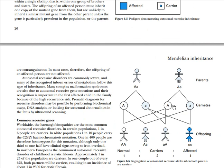By the Mendelian principle of segregation in autosomal recessive inheritance: when two parents are carriers, the probability of producing children who are carriers is two-thirds, because three of the unaffected children will be phenotypically normal and two of them may be carriers. The probability of producing an affected child is one in four.